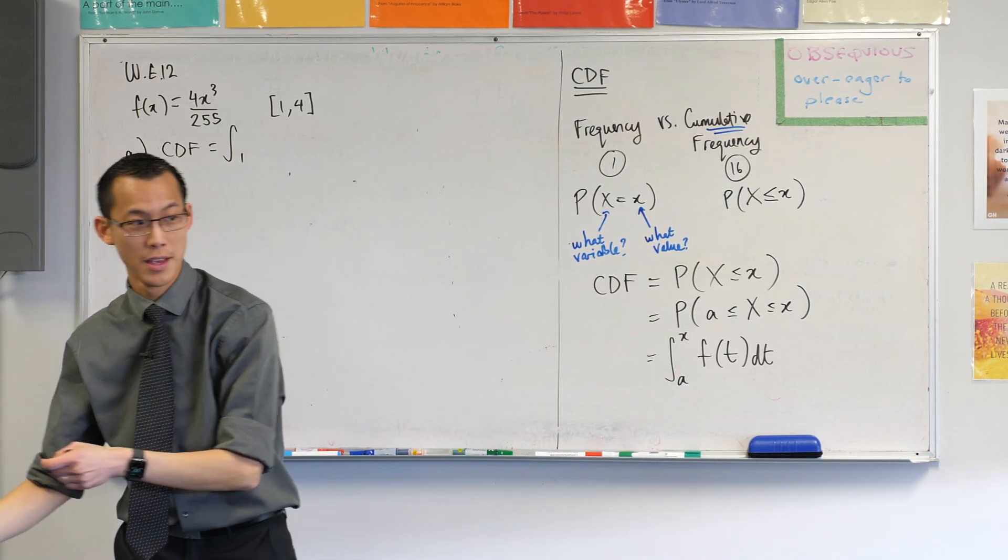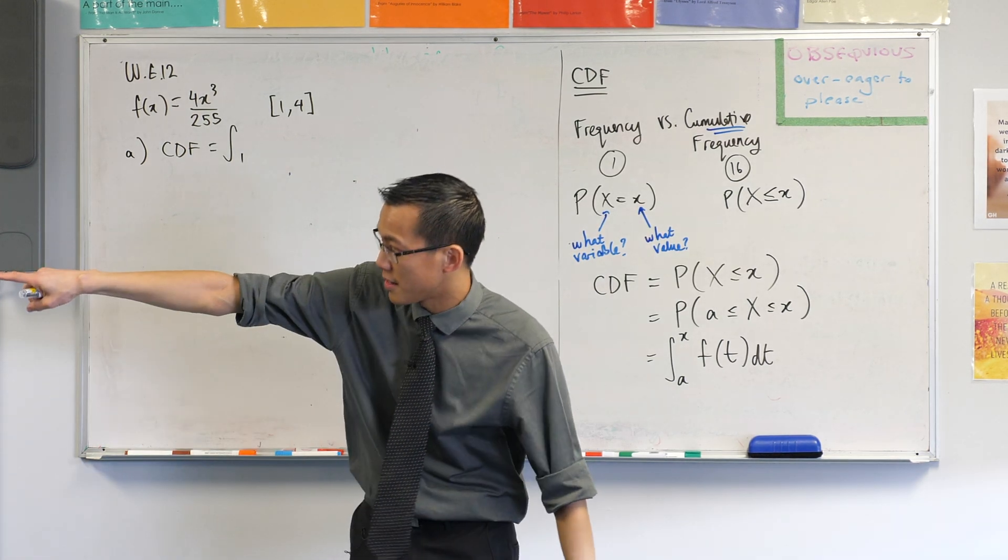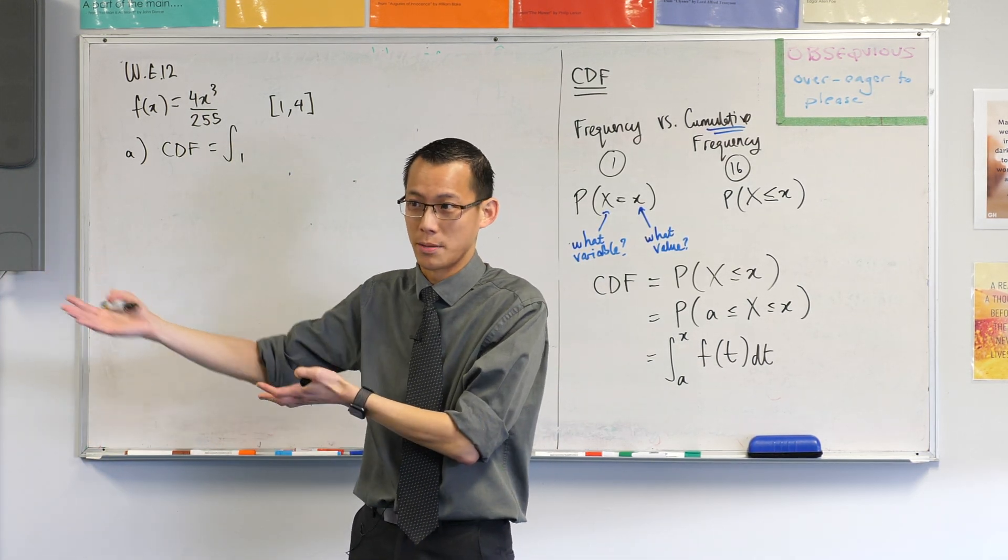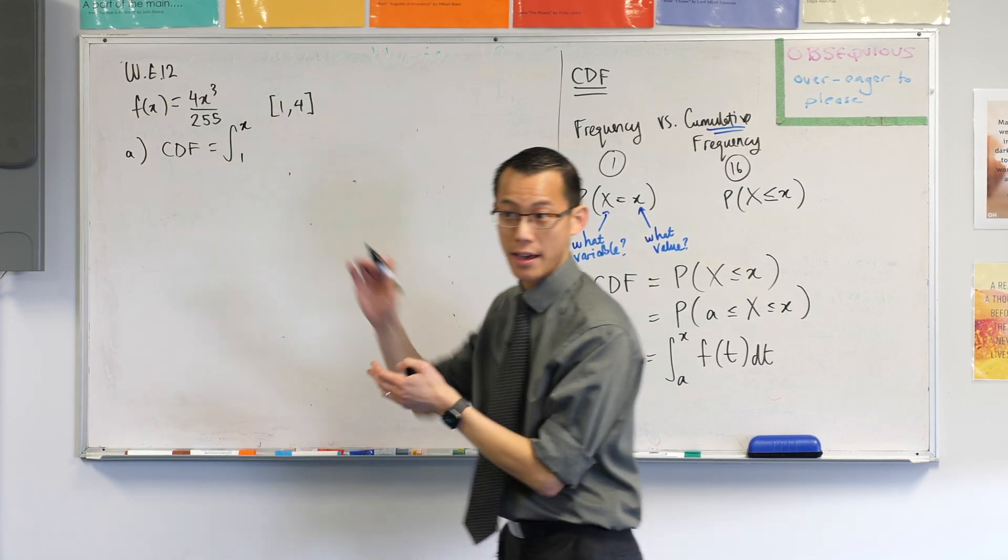Maybe that's 190 centimeters, maybe it's 170 centimeters. In this, it goes from 1 to 4, so I don't know what this actually represents, but x is going to be somewhere in there. So I'm going to go from 1 to x, okay?